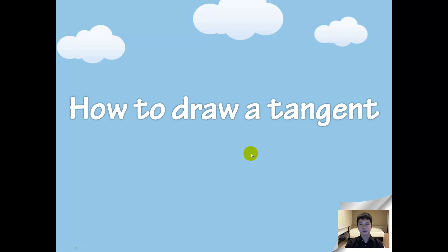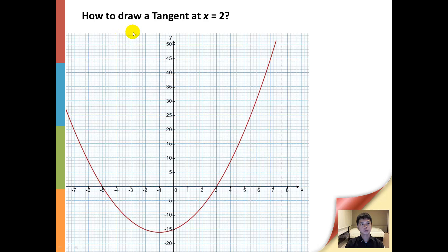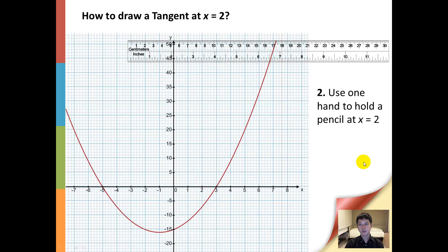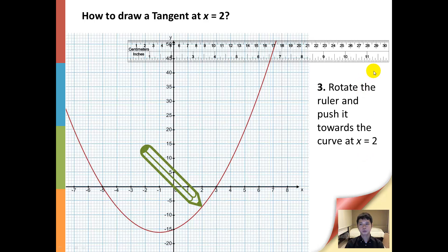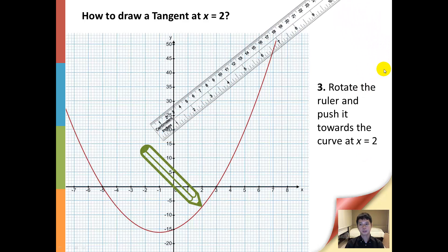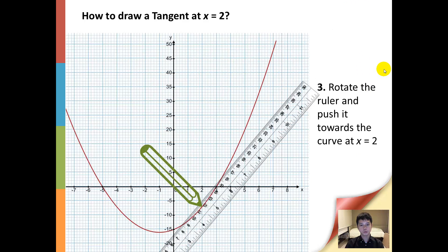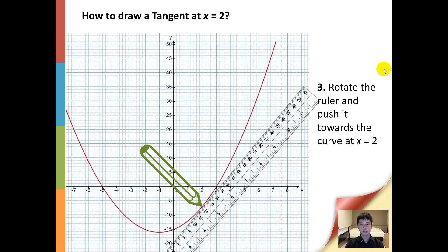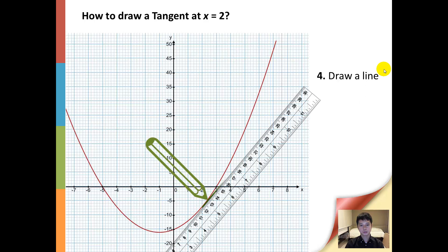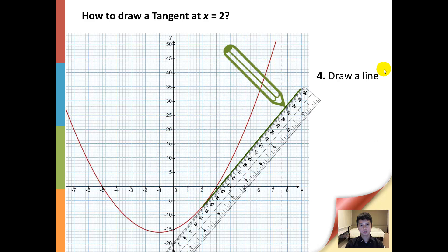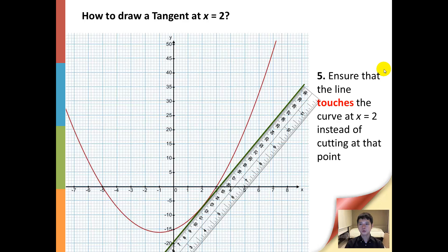Now let us look at how to draw a tangent. To draw a tangent at x equals 2, we shall first use a ruler, then we will use one hand to hold a pencil at x equals 2. Next, we shall rotate the ruler and push it towards the point x equals 2, and we can now go ahead to draw our tangent. While rotating the ruler, do ensure that the line only touches the curve at x equals 2 instead of cutting through that point.